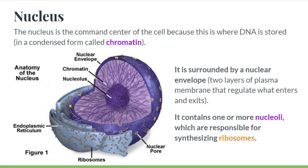So the nucleus: it's a command center, it has all of the instructions, and the regulation for which of those instructions get copied and go tell the cell what products are going to be made happens within that nucleus. The DNA is stored in a form called chromatin — that is DNA wrapped around histone proteins. It's a super compact form because each of your cells has about six feet of DNA that has to be stored inside this microscopic nucleus, so you do that by super-winding and condensing it.